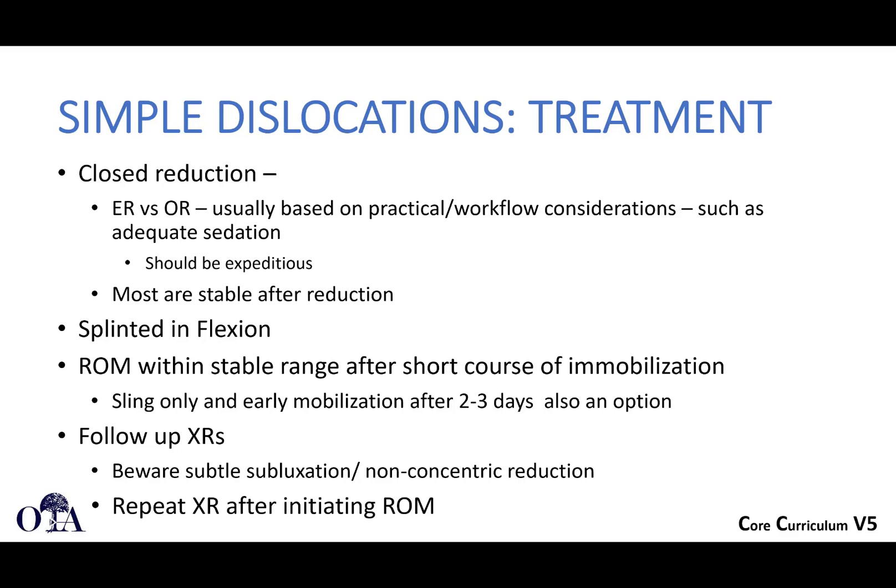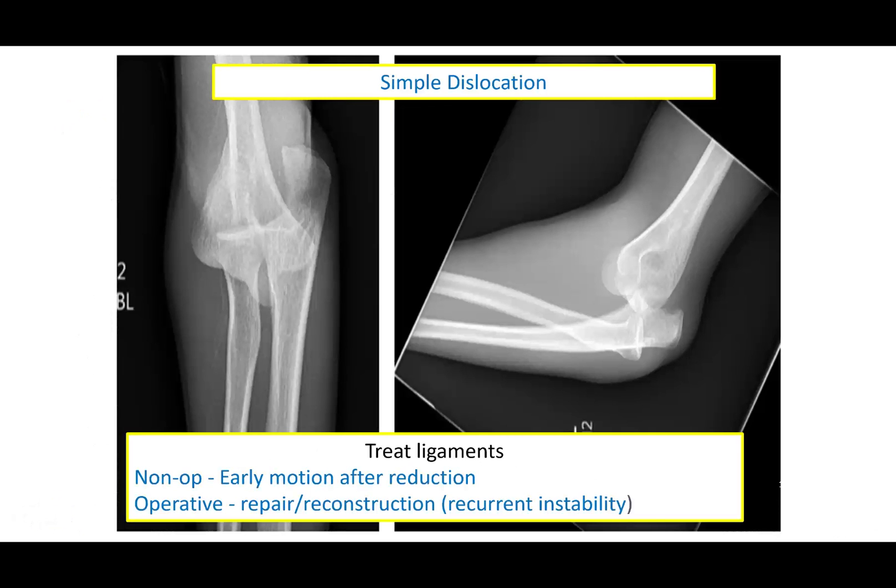Motion can be performed within a stable range — if the elbow dislocates in full extension, don't go to full extension right away. Treatment options include sling only with early mobilization, or a short course of immobilization and splinting. The key is ensuring the elbow is reasonably stable after reduction. Follow-up X-rays confirm concentric reduction without residual subluxation.